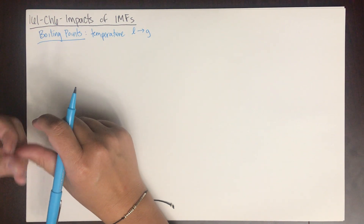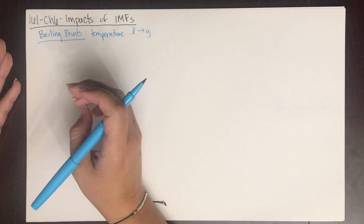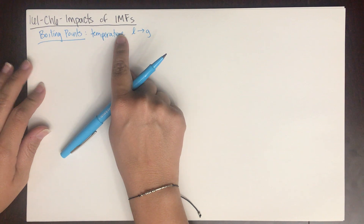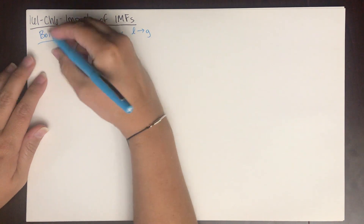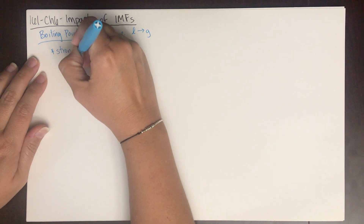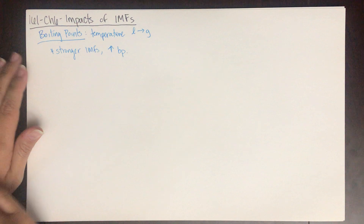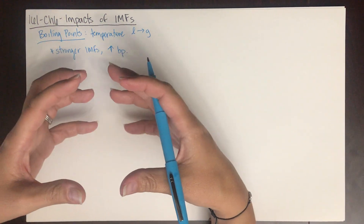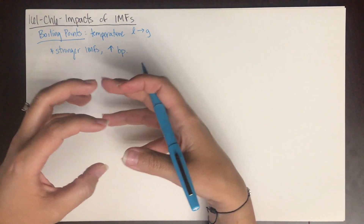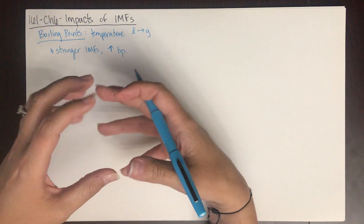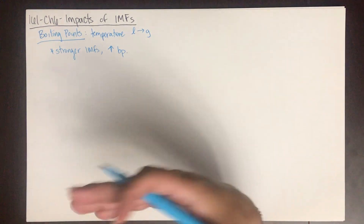The boiling point is really an amount of energy — temperature is just a quantity of heat, and heat is a type of chemical energy. The boiling point is how much energy we have to put in to go from a liquid phase to a gaseous phase. The stronger the intermolecular forces, the higher the boiling point, because the more these molecules are attracted to each other, the more energy you have to put in to move from a liquid phase where molecules are close together to a gaseous phase where molecules are free-moving and far apart.